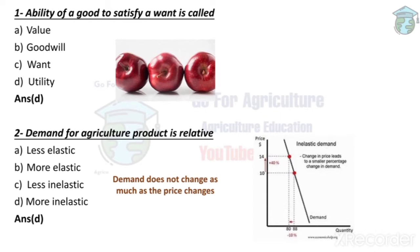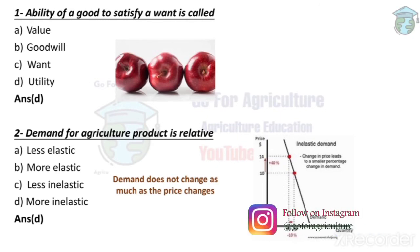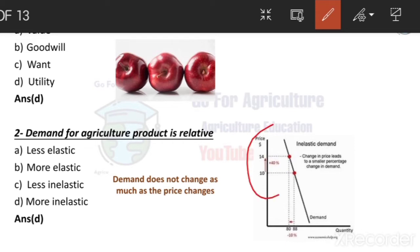Next question: demand for agricultural products is relatively more inelastic. Inelastic means that even when there is a huge change in price, the change in demand will be very little. If there's a huge change in price and only a small change in demand, that is called inelastic. You can see this on a graph — a big change in price sector, but only a small change in demand.